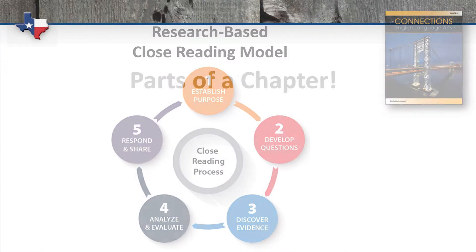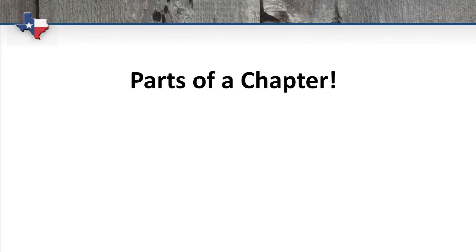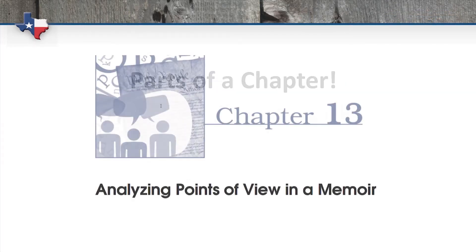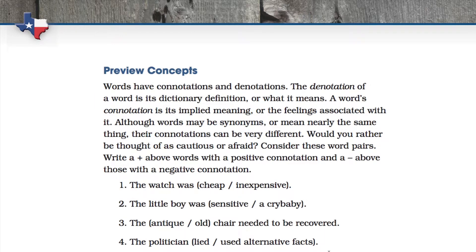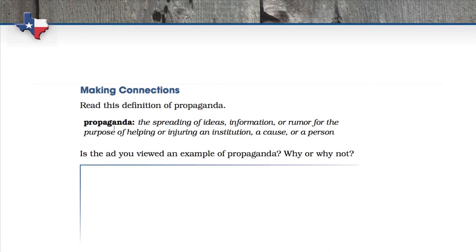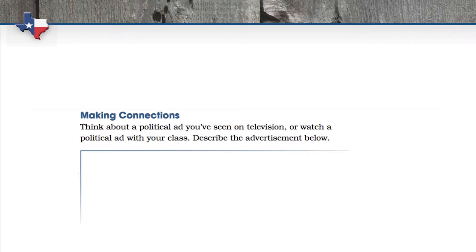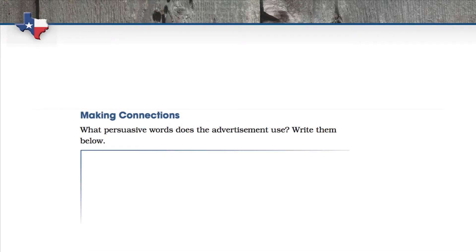Now that we've looked at the close reading model, let's take a look at all of the components in a chapter in Connections. Every chapter has the same consistent format that becomes familiar to the student as they progress through the book. Each chapter opens with previewing ideas and making connections — we want to discuss the concepts and ideas in the passage to come and connect these ideas to the student's own life and experience. The goal is to get their brains thinking in the right direction before we commence reading the selection.